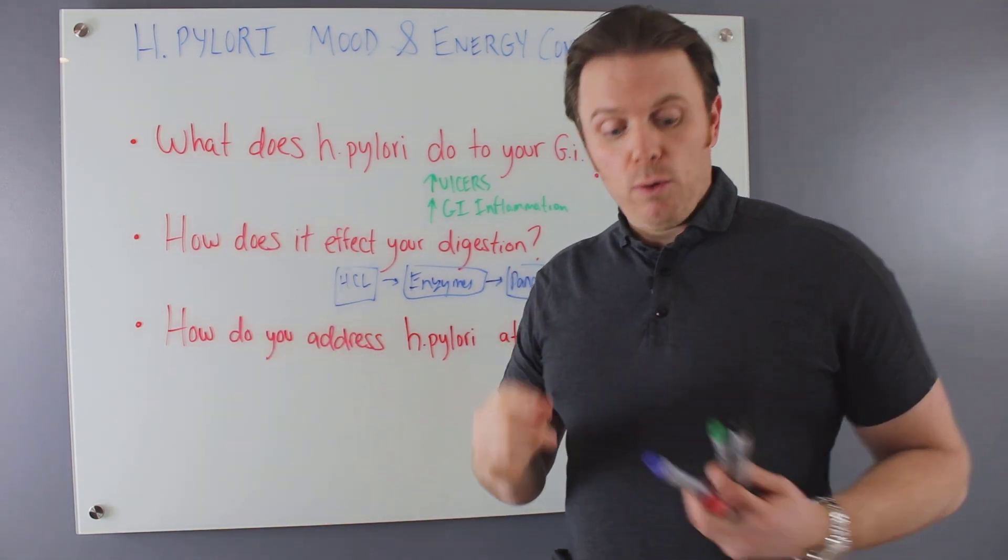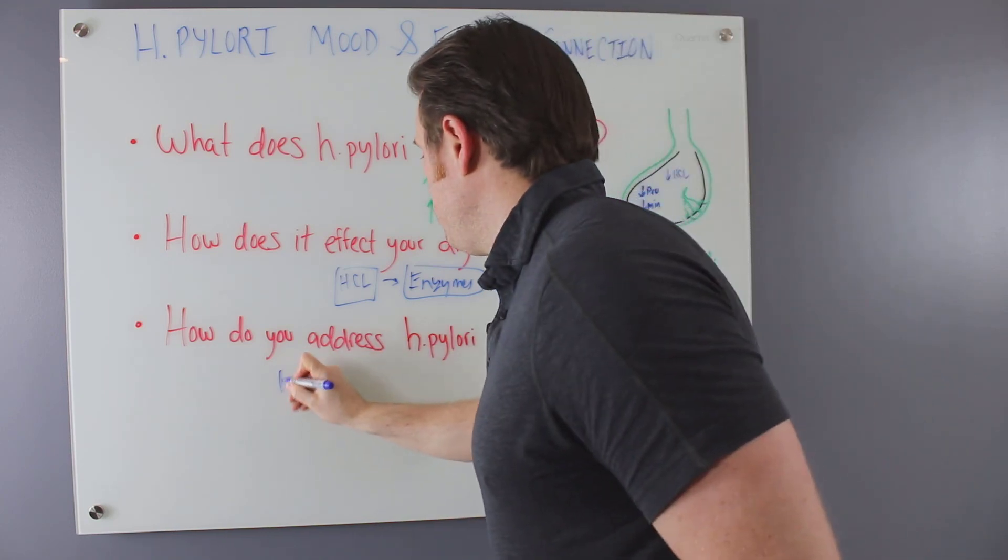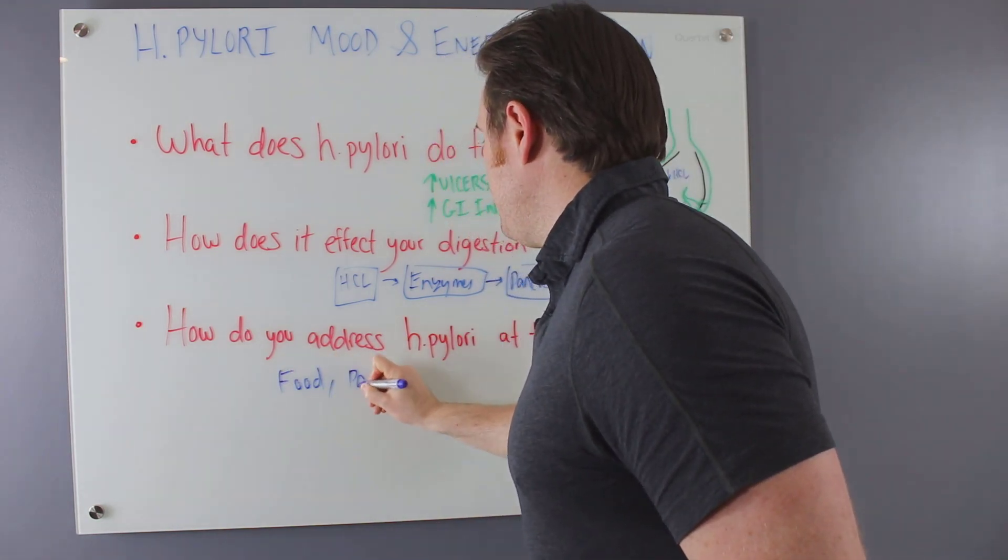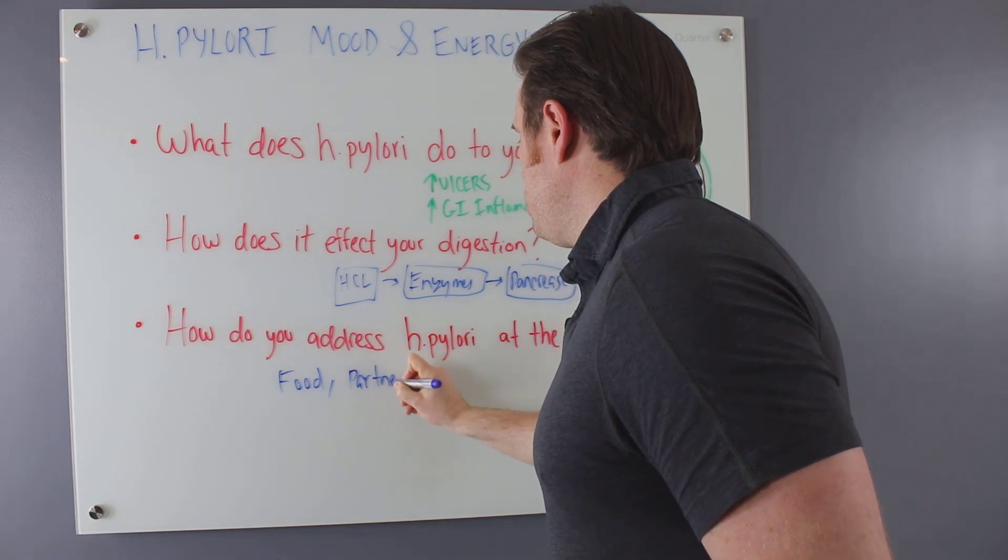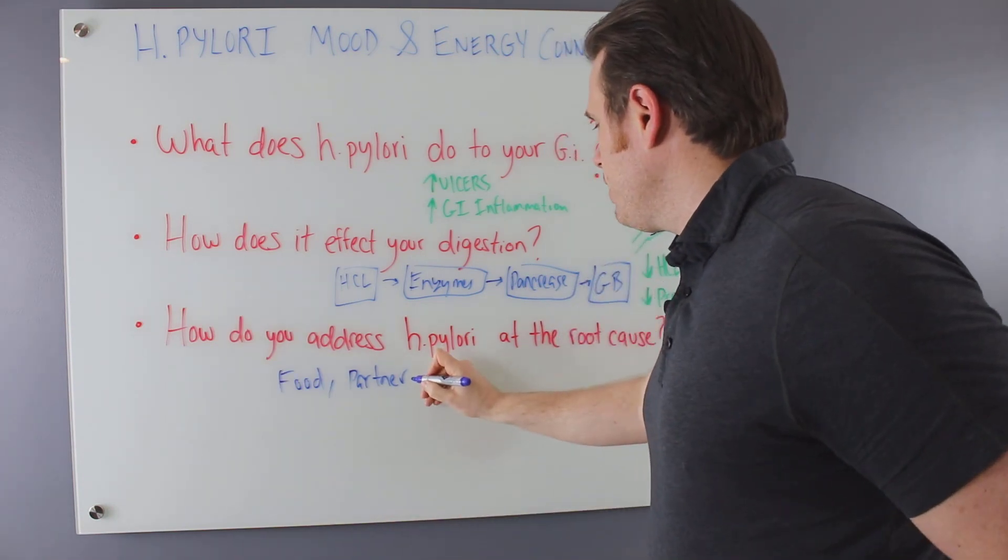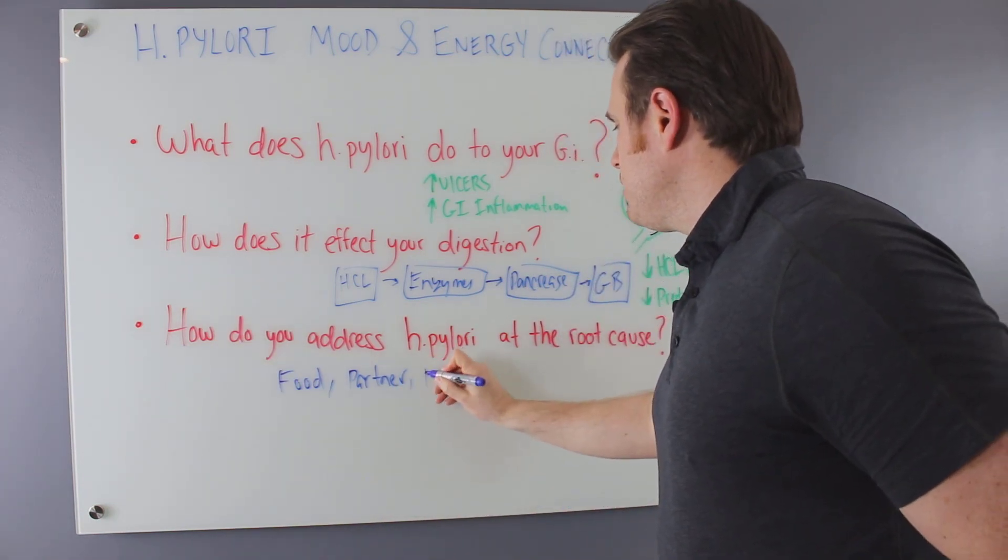Once you have H. pylori number two, you have to address the food. You have to look at your partner because you could have the infection, but then you could be hot potato-ing the infection back with your partner because it can be spread via saliva pretty easily. You have to fix digestion.